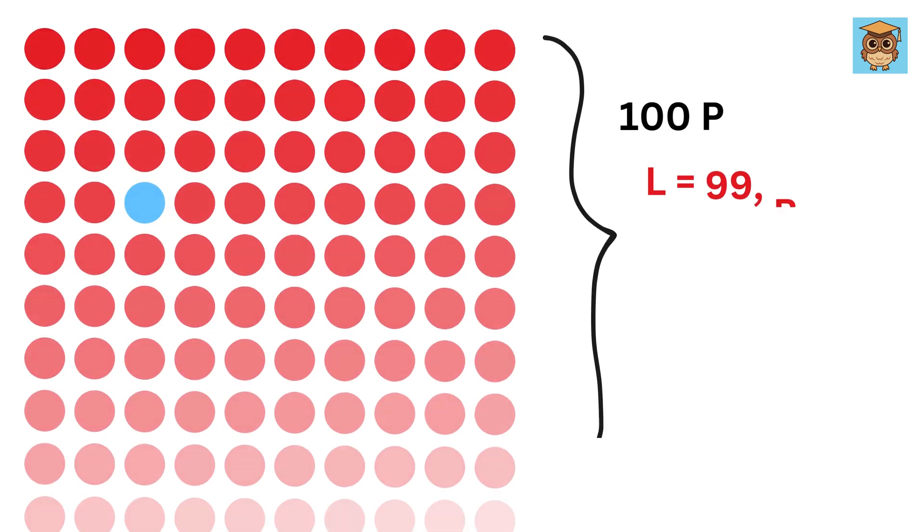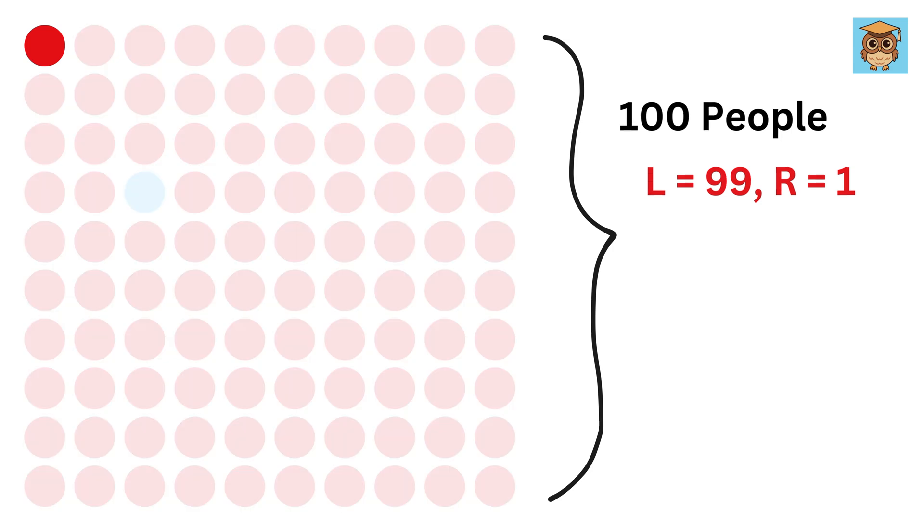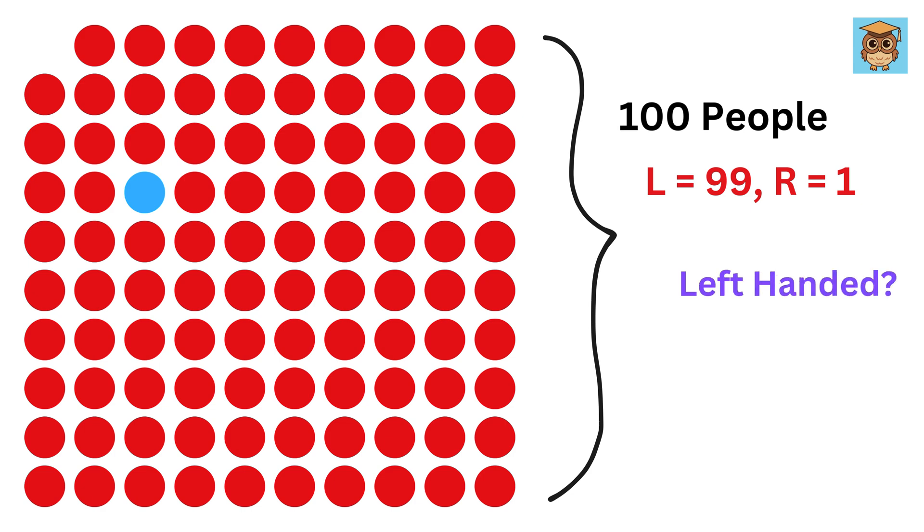Assume out of these 100 people, I ask this poor left-handed guy to leave the room. Now tell me how many left-handed people are left. There are 98 left-handed people, right?